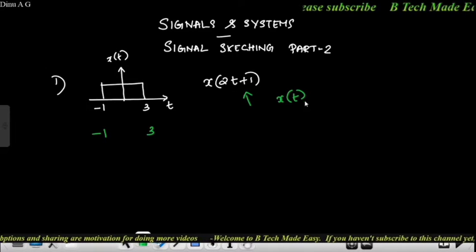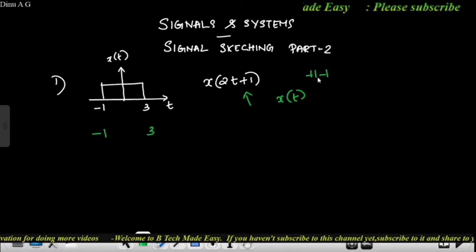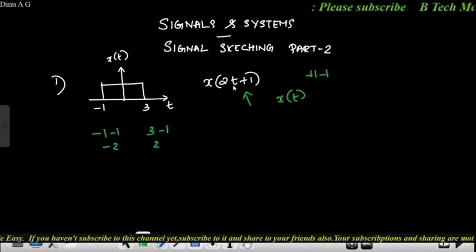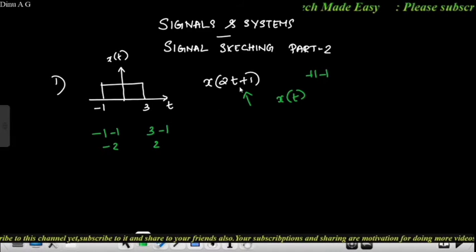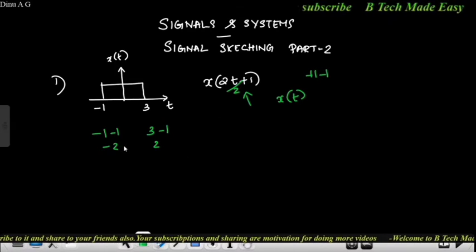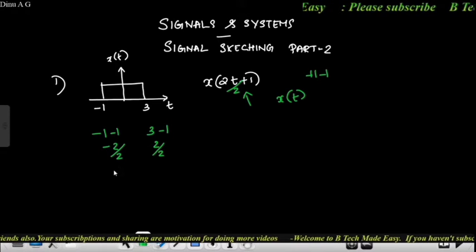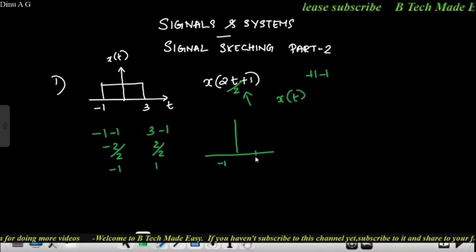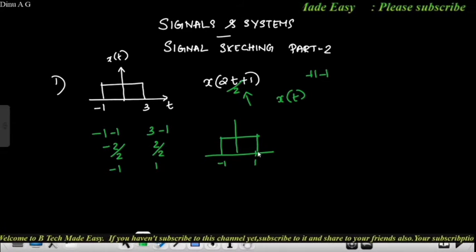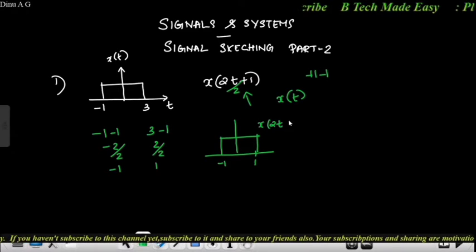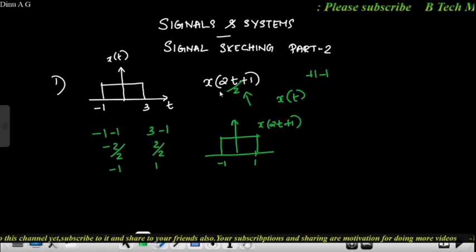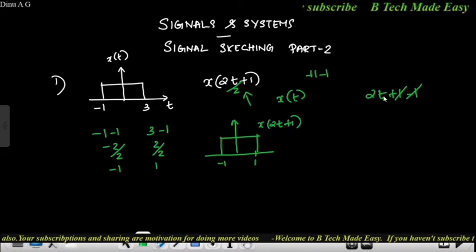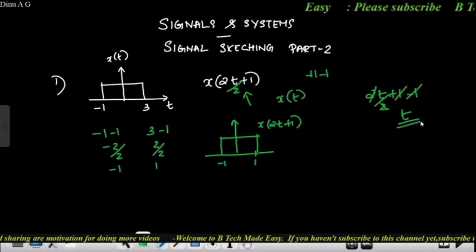If you change the bracket of t, you have to change plus 1 to minus 1, giving minus 1. Then minus 1 minus 1 equals minus 2. Now for 2t, we divide by 2 to get the answer. The limits become minus 1 and 1 after dividing. This is our x of 2t plus 1.